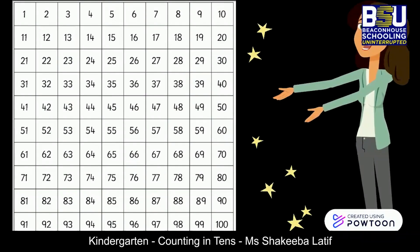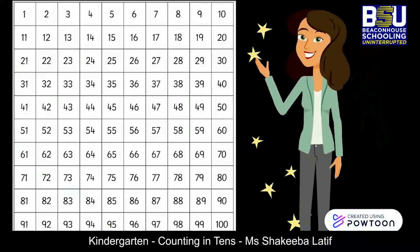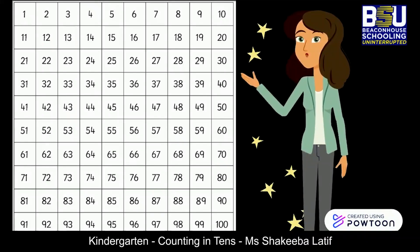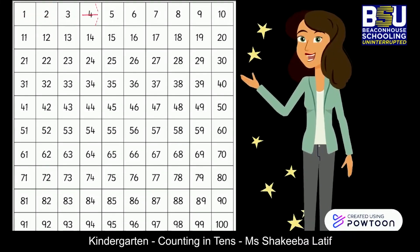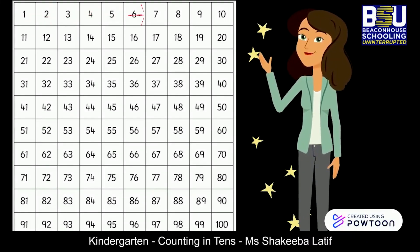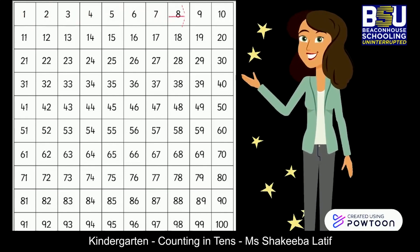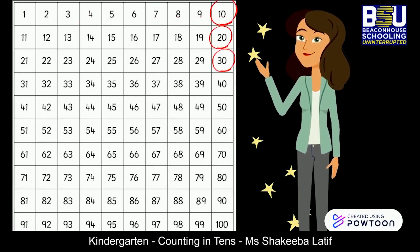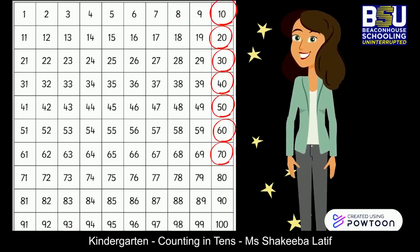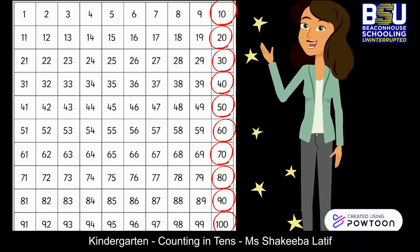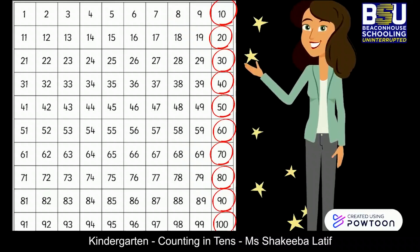Let's use a hundred square grid to learn counting in tens. On a hundred square grid, I will count forward 10 numbers. Counting by tens is really just skipping forward 10 more numbers from the last number you said.